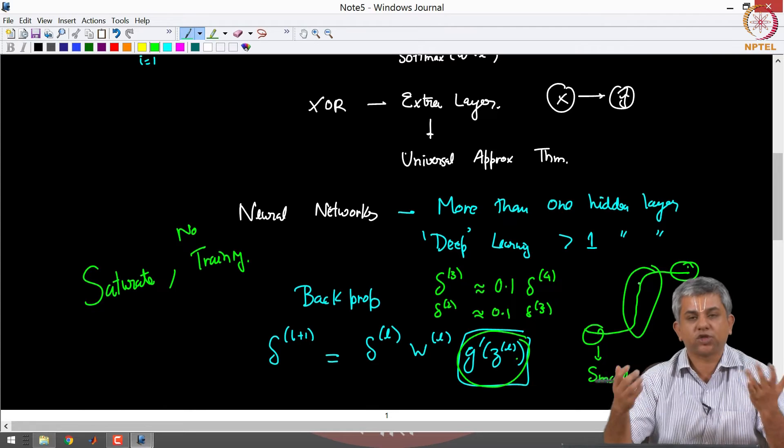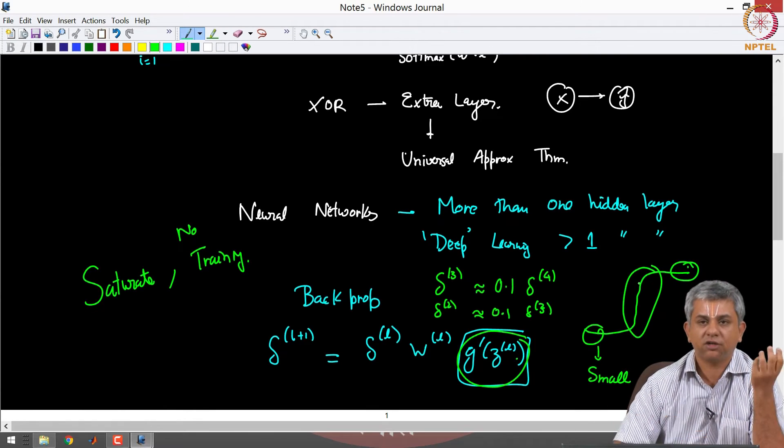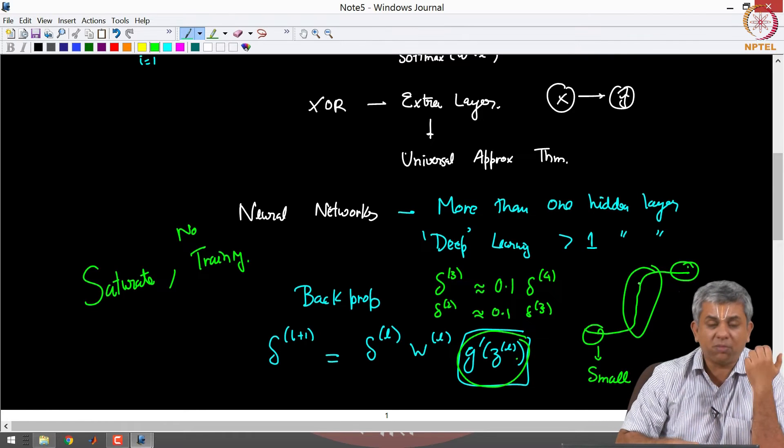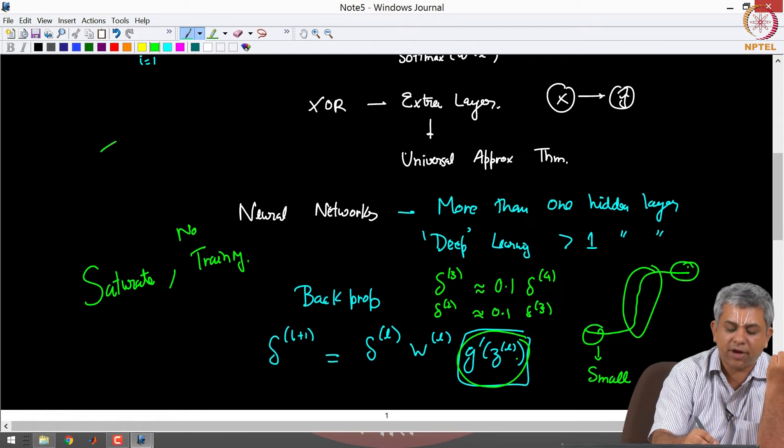Similarly here too it will stop training. This is called saturation, that is your value is so close that your slopes are very low and this is the fundamental problem in training deep networks.